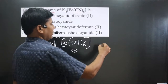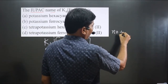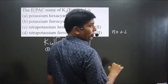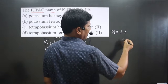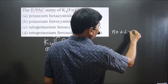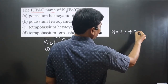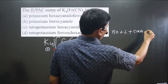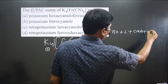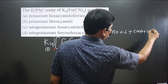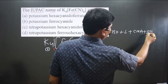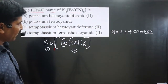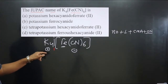The order of naming a complex is: number of ligands, then type of ligand, then the central metal atom, and then the oxidation number of the central metal atom written in Roman numerals.